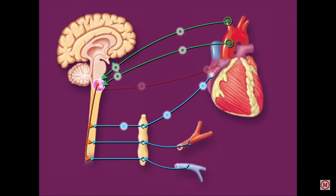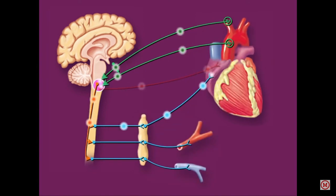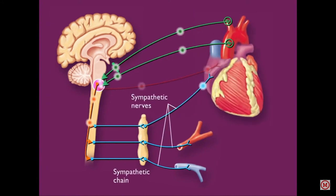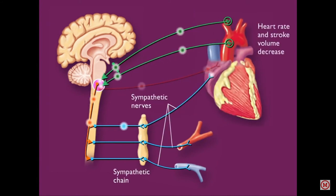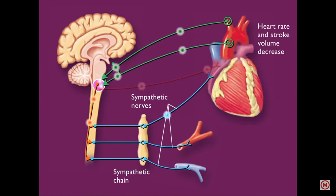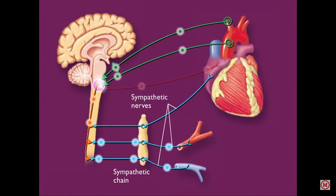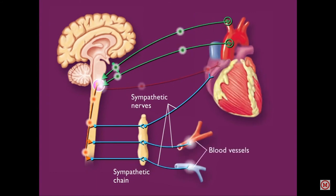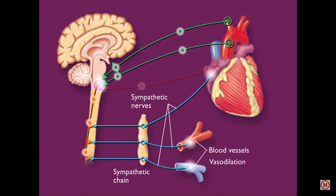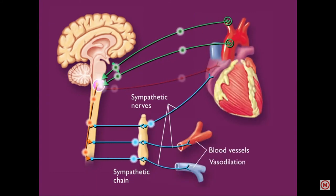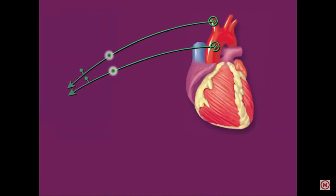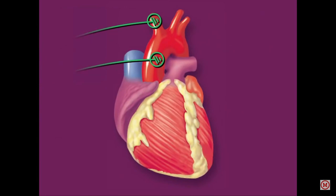Also, baroreceptors decrease sympathetic stimulation to the heart, resulting in decreased heart rate and stroke volume. The vasomotor center present in the medulla decreases sympathetic stimulation to the blood vessels, causing vasodilation. Hence, this vasodilation, decreased heart rate, and decreased stroke volume bring the blood pressure back to normal.